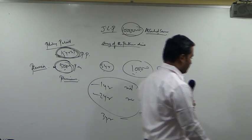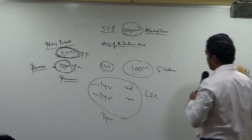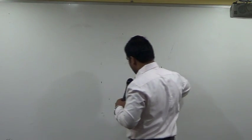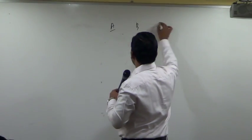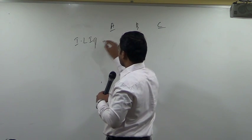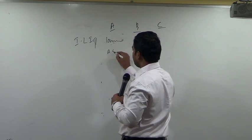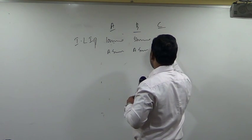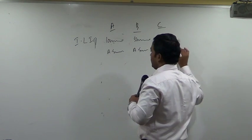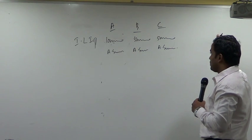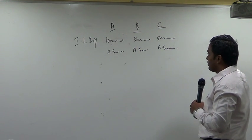Apart from joint life policy, the firm can buy individual policies also. Suppose there are three partners — Partner A, Partner B, Partner C. The firm can buy individual life insurance policies: for A, 10 lakh assured sum; for B, 5 lakh assured sum; for C, 5 lakh assured sum. Instead of buying one policy for all the partners, they can go for individual life insurance policies.